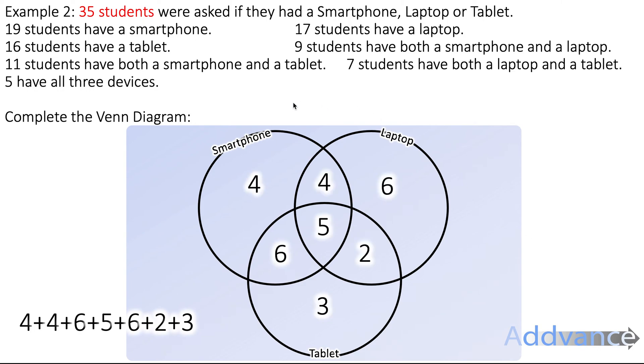We've filled in the inner parts. But there might be students who have neither a smartphone, nor a tablet, nor a laptop. So how many students are we up to? 4 plus 4 plus 6. That's 14. Plus 5. 19. Plus 6. 25. Plus 2. Plus 3. That's 30. So this adds up to make 30. But we know there's 35 students in total. So we do 35 minus 30 will give us 5. Therefore, to make sure the entire Venn diagram adds up to 35, there must be 5 on the outside.